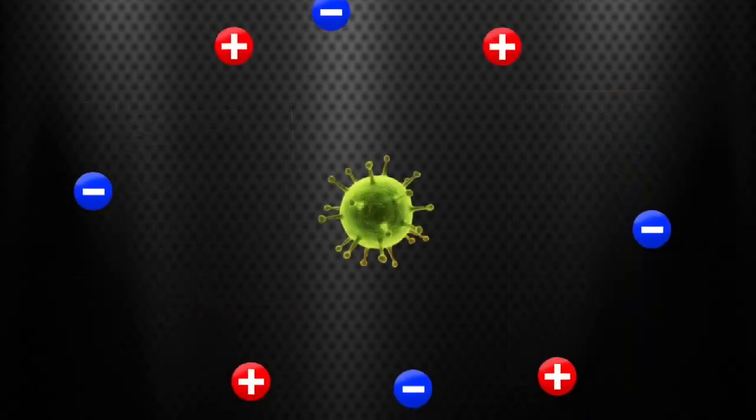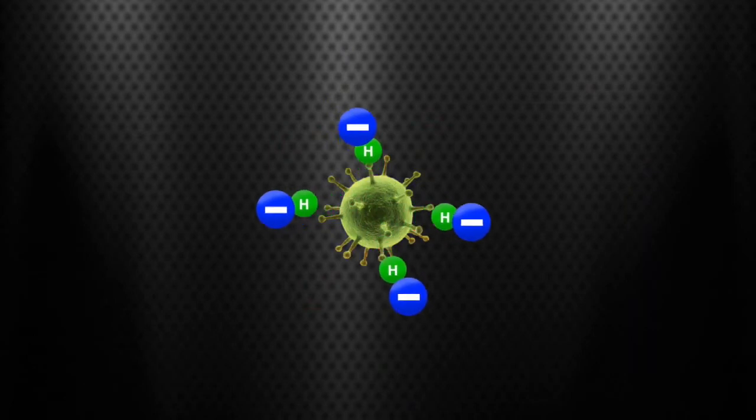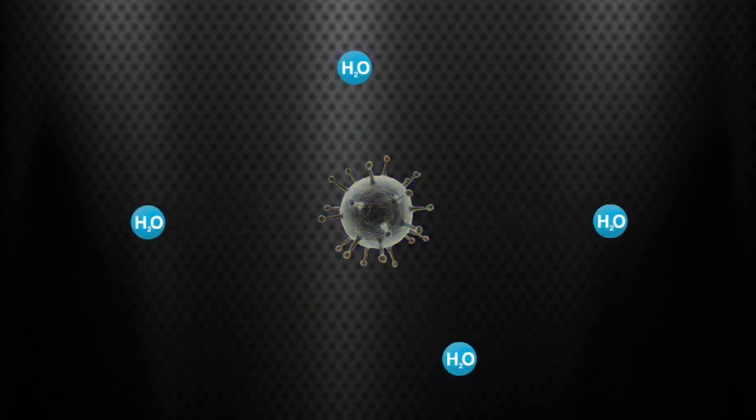When the ions come in contact with viruses, bacteria or mold, they remove the hydrogen atom from the pathogens. Without hydrogen, the pathogens have no source of energy and will die.